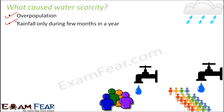Another cause of water scarcity is that rainfall occurs only during a few months of the year. In India, for example, there is heavy rainfall during the monsoon, but very little during summers and winters. During summer, there is no rainfall and at the same time water consumption is higher due to the heat, so both factors together lead to water scarcity.